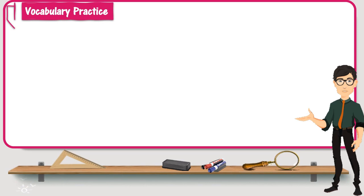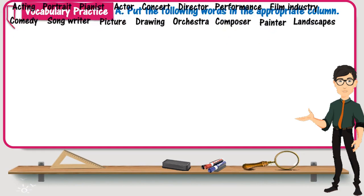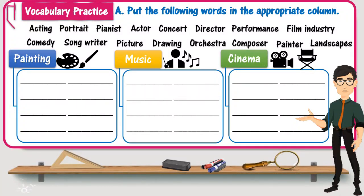Let us now practice using more words related to the theme of arts. In this exercise, I would like you to put the following words in the appropriate column. You can see three columns, so I would like you to classify the words into those related to painting, those related to music, and finally those related to cinema. Try to stop the video, think of the exercise, answer, and we shall correct in a few moments.